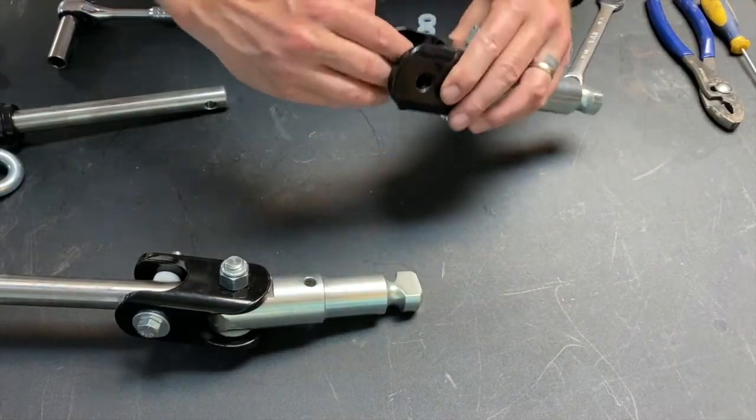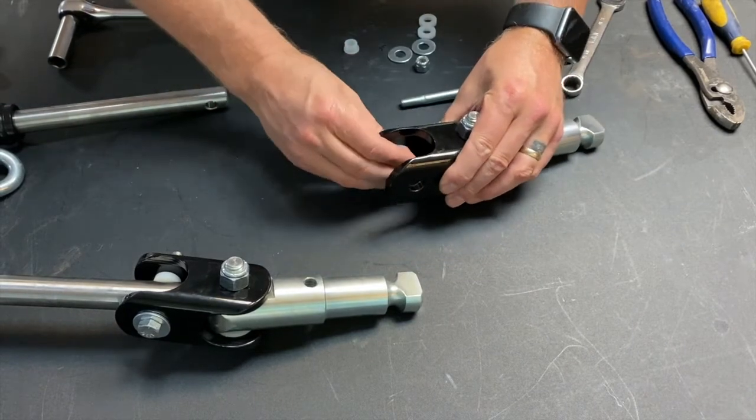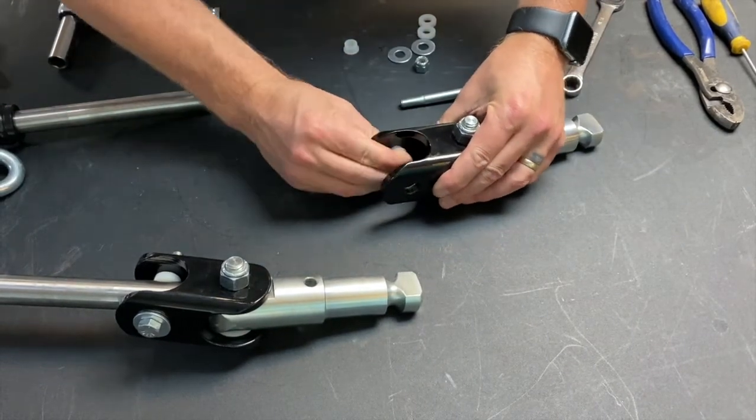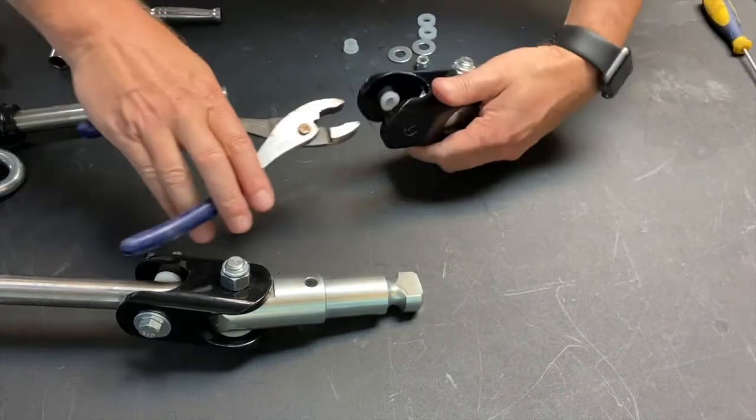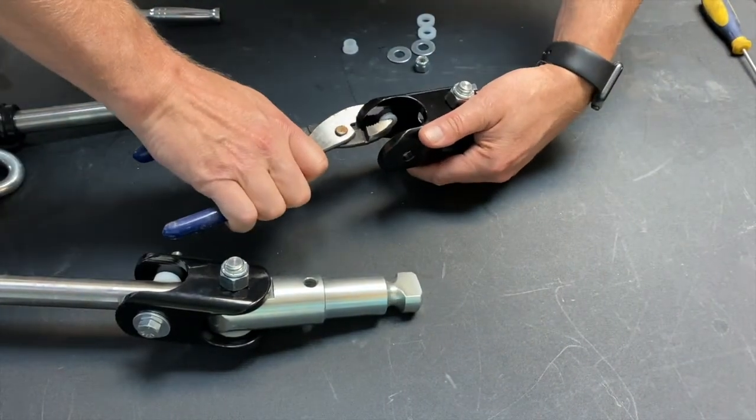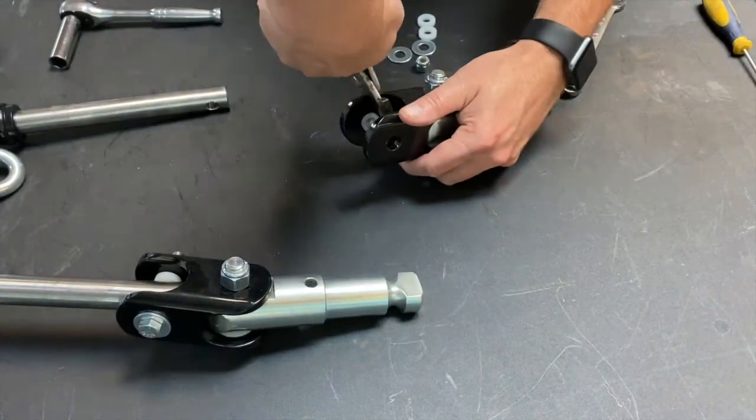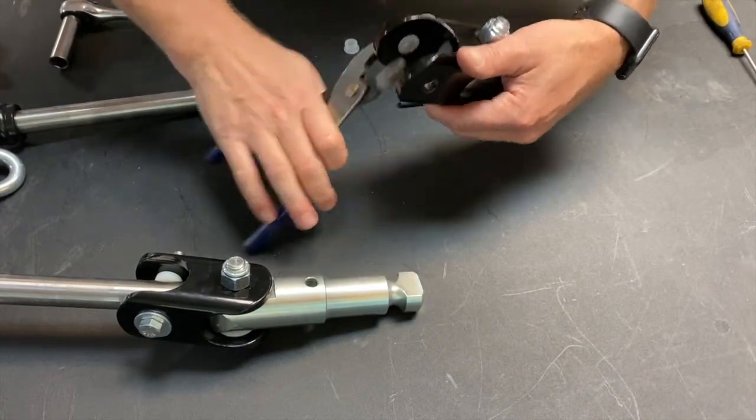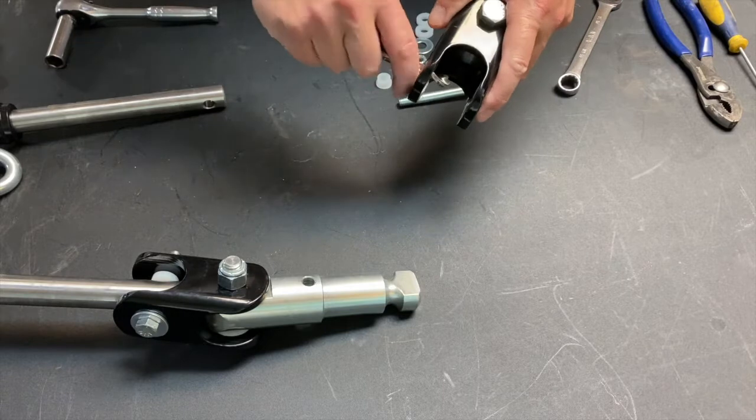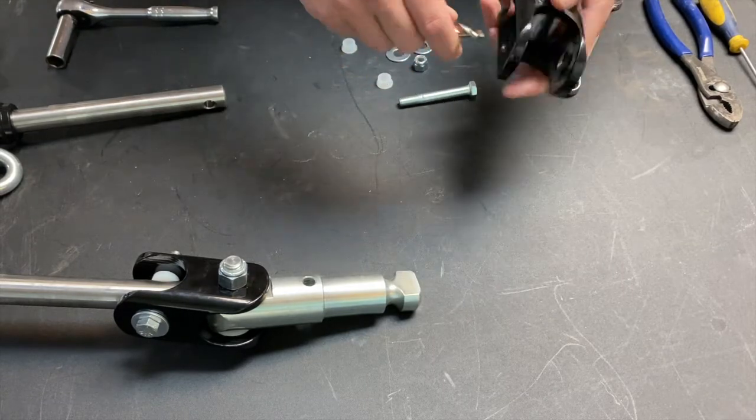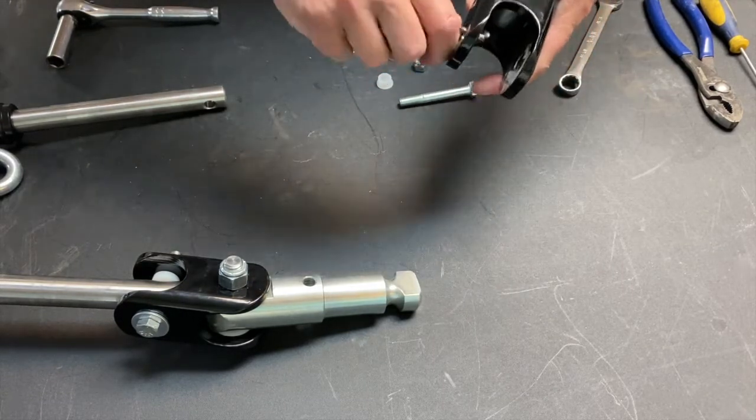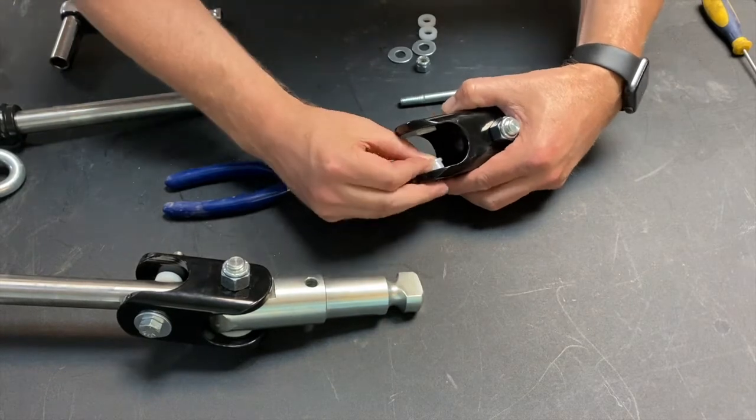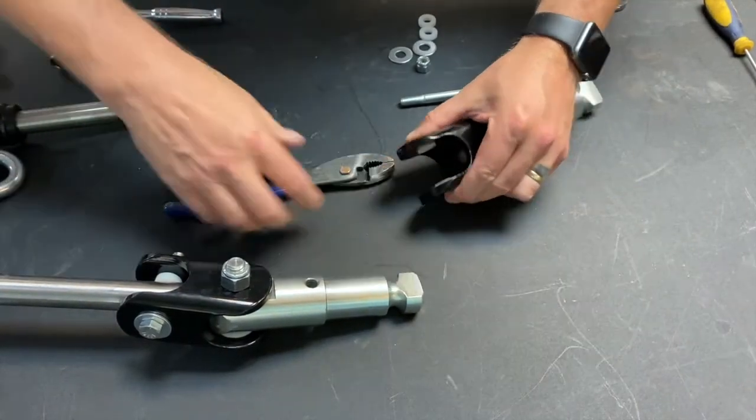First you will need to push the poly bushing into the clevis. This can be a little bit tricky. If you can't push in with your fingers you can use some pliers. If you are still having difficulties pushing in the poly bushing you can try cleaning the hole out with a half inch drill bit. This will remove excess paint or burrs from the manufacturing process.